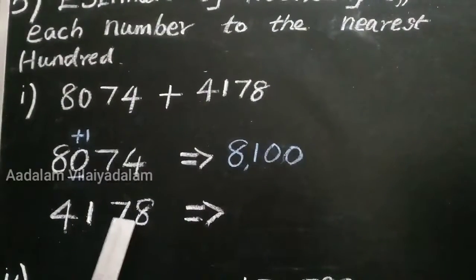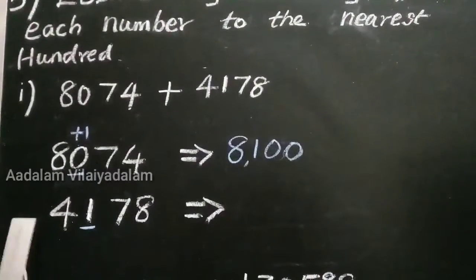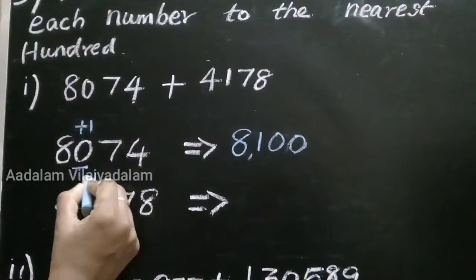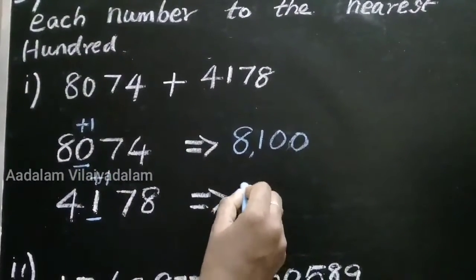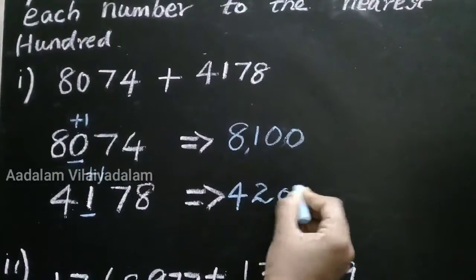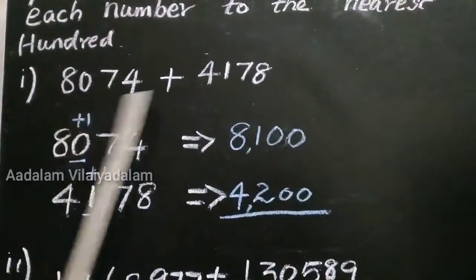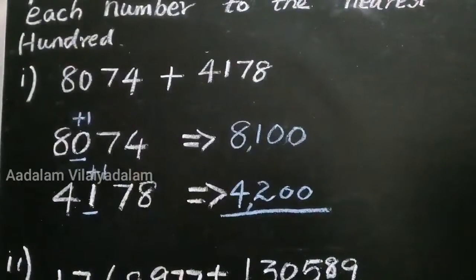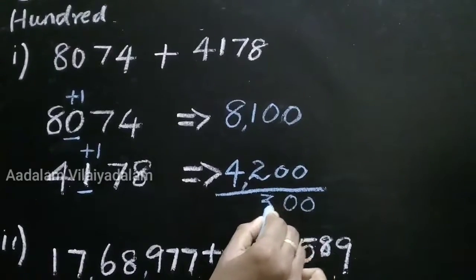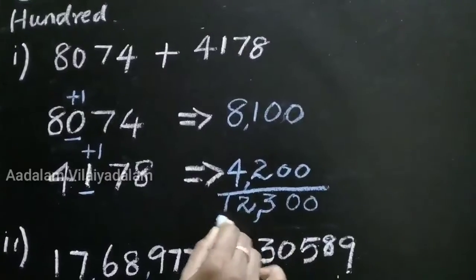For the second number 4,178, identify the 100 digit — 1 is the 100 digit. The next digit is 7, which is greater than 5, so add one number. The first number is 4, second number 1 plus 1 equals 2. Remaining, we put 0. So 4,200 is the round off value. Now add: 8,100 plus 4,200. 2 plus 1 is 3, 8 plus 4 is 12. So 12,300 is the answer.